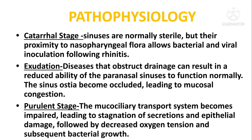Pathophysiology. Catarrhal stage: sinuses are normally sterile, but their proximity to nasopharyngeal flora allows bacterial and viral inoculation following rhinitis. Exudation and disease that obstructs drainage can result in a reduced ability of the paranasal sinuses to function normally, and the sinus ostiae become occluded leading to mucosal congestion. Purulent stage: the mucociliary transport system becomes impaired, leading to secretion retention and epithelial damage, followed by decreased oxygen tension and subsequent bacterial growth.